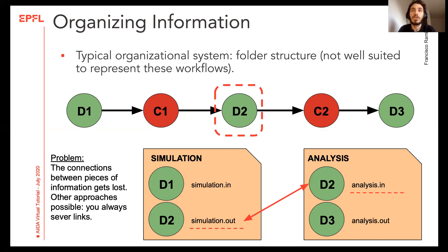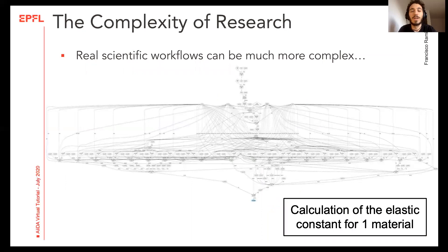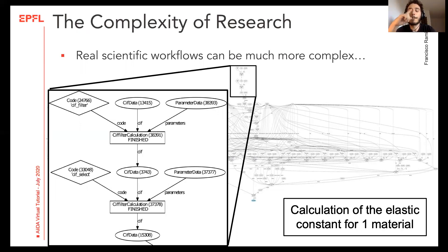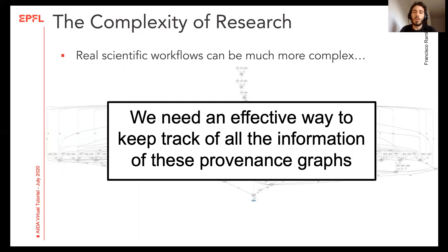Real life scientific workflows look like this. These are all the steps involved in calculating a single property for a single material. Here is a zoom window so you can get a better idea of the scale of this graph. It is easy to understand how high-throughput projects requiring multiple properties calculated for thousands of materials would compound on this issue. It is incredibly difficult to keep track of all of these connections manually — we need a tool that will help us keep track of the full provenance graph. This is how keeping provenance has become one of our main focuses in developing AIDA as software to support high-throughput projects.